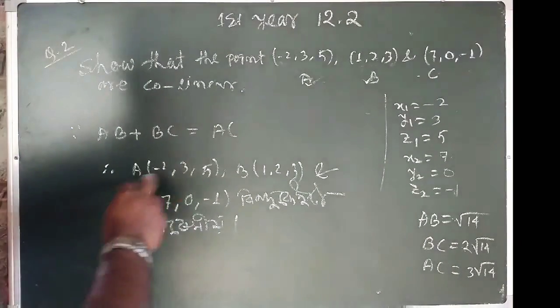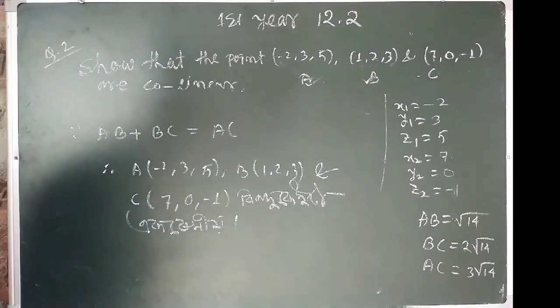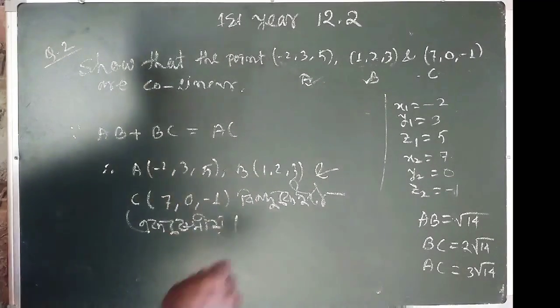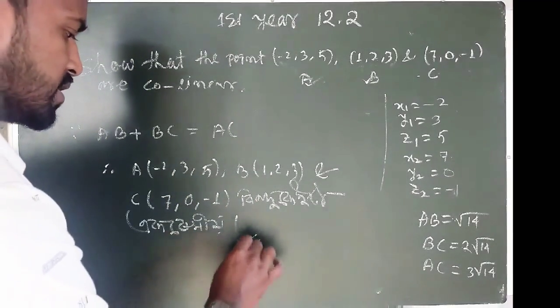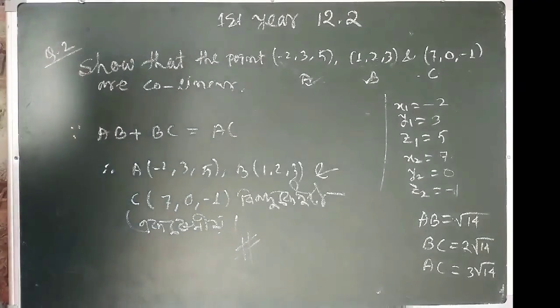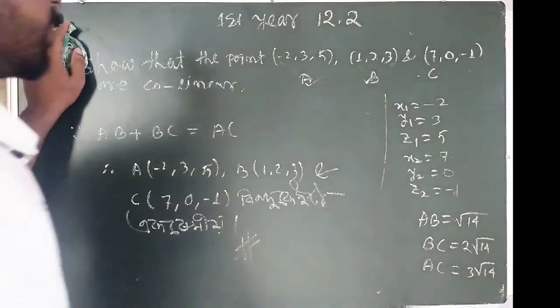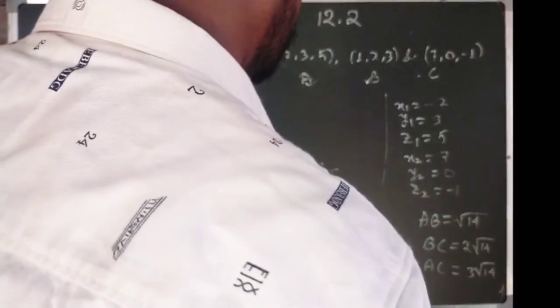Therefore, AB plus BC equals root 14 plus 2 root 14 equals 3 root 14 equals AC. Therefore A, B, C points are collinear. Next class, question number 3. Thank you.